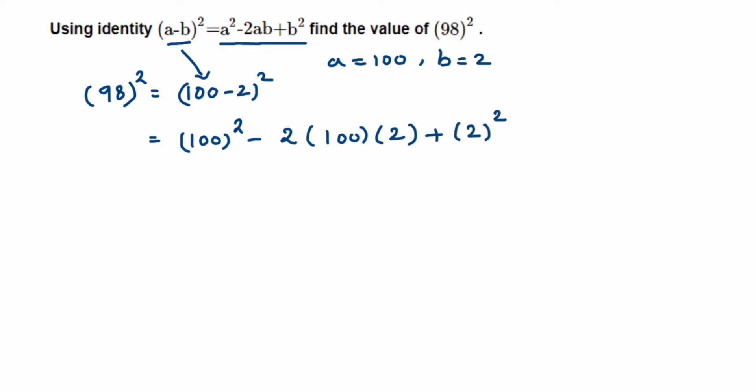So 100² is 10,000 - multiply, so 2 × 2 is 4, 4 × 100 is 400, so 400 plus 2² is 4. Now 10,000 - 400 will be 9,600.